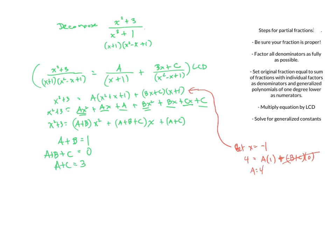Since x squared minus x plus 1 has only imaginary roots, I can't use the same trick to eliminate A. But using A equals 4 in the system: 4 plus B equals 1 gives B equals negative 3, and 4 plus C equals 3 gives C equals negative 1.